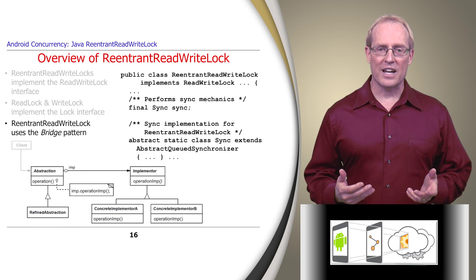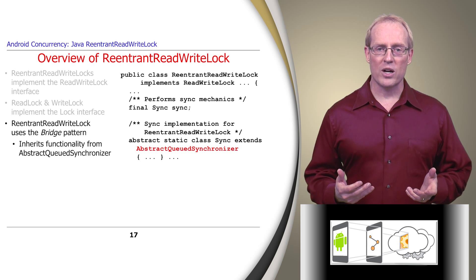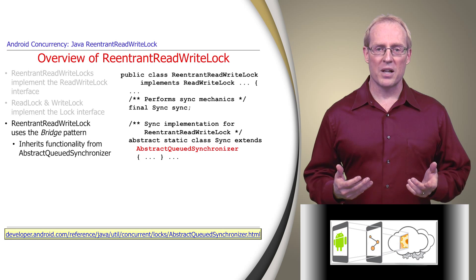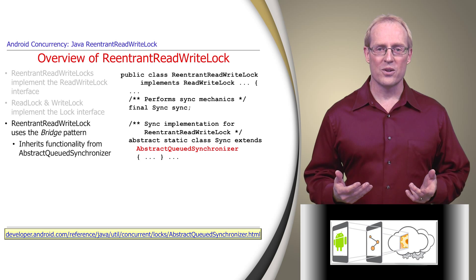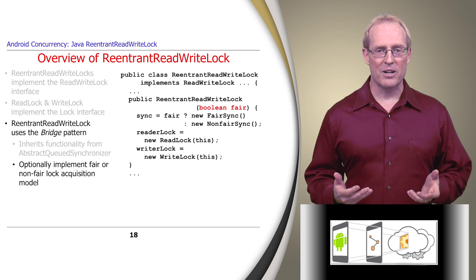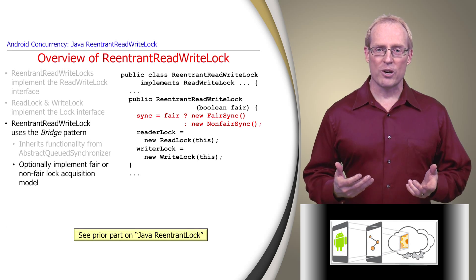ReentrantReadWriteLock uses the Gang of Four bridge pattern for several purposes. First, it inherits the bulk of its functionality from the AbstractQueuedSynchronizer class, which provides a framework for implementing blocking locks and synchronizers that rely on first-in, first-out, or FIFO wait queues. Second, it implements a fair or non-fair lock acquisition order model via a common interface. Its constructor selects the designated model based on the fair parameter, similar to the ReentrantLock presented earlier in this video.